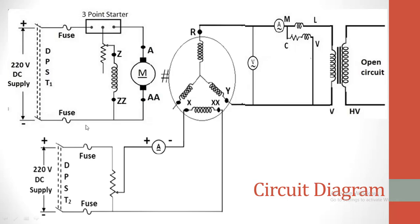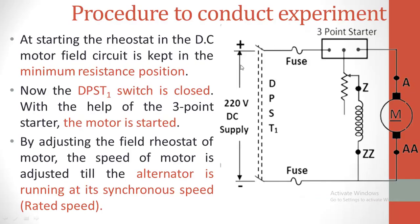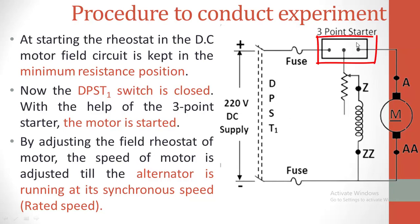First we will discuss for motor and next we will discuss for the generator. This is the motor circuit: DPST switch, three-point starter, rheostat placed in the field circuit, and this is the armature circuit. At starting, the rheostat of the DC motor is kept in the minimum resistance position. The DPST switch is closed, and with the help of the three-point starter, the motor is started.